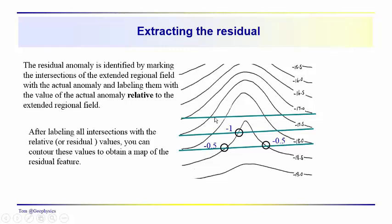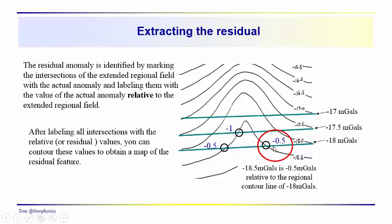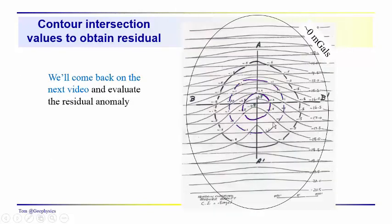And so on. So, what we do is we draw these lines through here. We label all the intersections. And again, relative to the regional, minus 17, minus 17.5, minus 18, the values relative to the regional. And again, this 18.5 contour line that we see in the actual data intersects the minus 18 milligal contour at this point. And it has a value which is negative 0.5 milligals relative to the regional contour line of minus 18. So we do that for all the points, and we get these values at all the intersections here, and then we contour them up. And you can see that we have a residual anomaly here, which has a circular shape. And some things that might come to mind would be that this could be a spherically shaped object, or that we might approximate it as a buried sphere of density contrast.